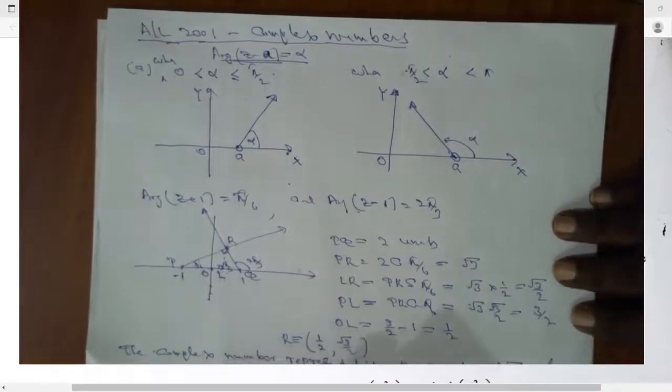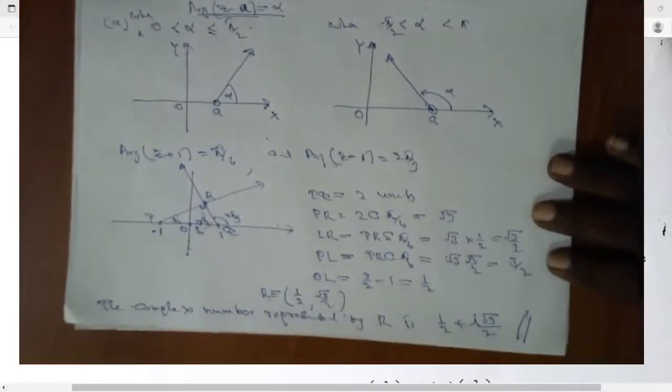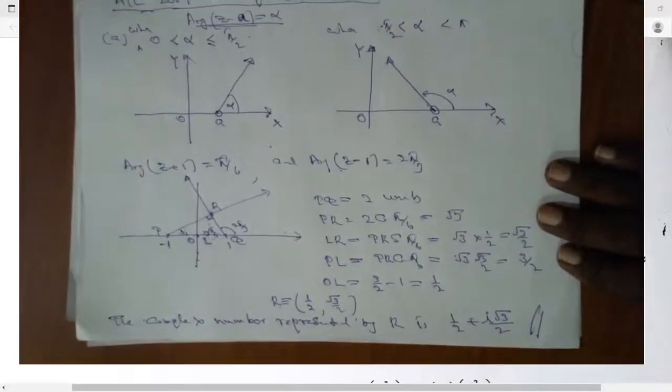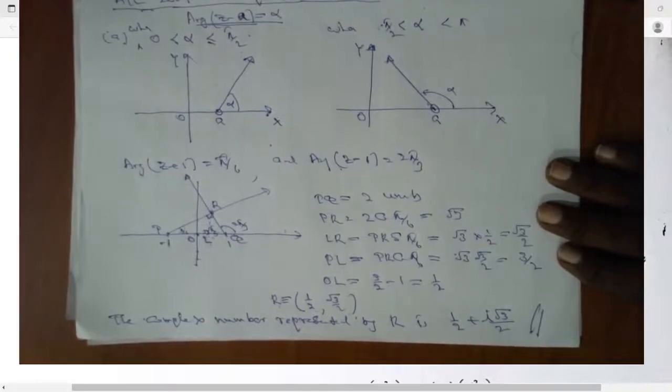Therefore, complex number represented by R is half plus i root 3 by 2. So very simple that part.